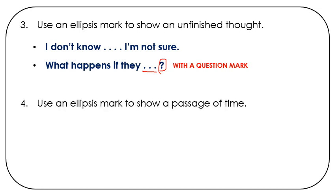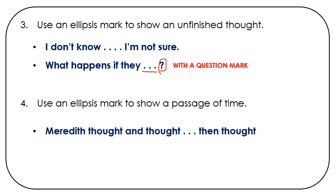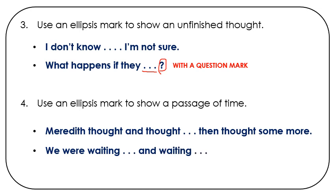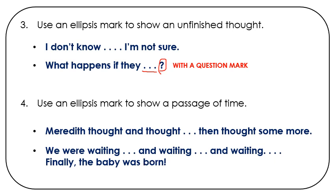Use an ellipsis mark to show a passage of time. For example: 'Meredith thought and thought, then thought some more. . . . We were waiting and waiting and waiting. . . . Finally, the baby was born.' Notice how there are three periods in the middle of the sentence, and at the end of the sentence there are three periods for the ellipsis mark and then the period for the end of the sentence.